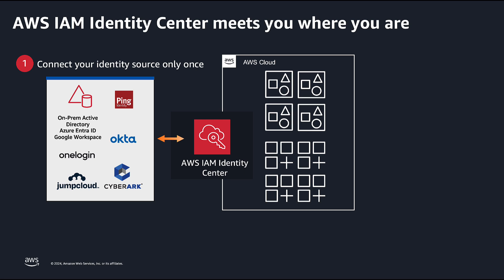AWS IAM Identity Center is the recommended service for managing your workforce's access to AWS applications or multiple AWS accounts, or both. It can be used to connect AWS to your existing identity provider, such as Microsoft Active Directory, Azure EnterID, JumpCloud, Okta, CyberArk, OneLogin, Ping, or Google Workspace. Alternatively, it can also assist you in creating users directly within AWS, providing a seamless integration with your existing identity management setup.